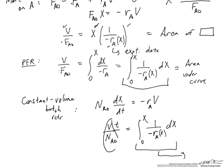For a constant volume batch reaction system we'll usually write this NA0 over V as CA0. And then again we can use the batch time divided by the initial concentration CA0 equal to that area under the curve.